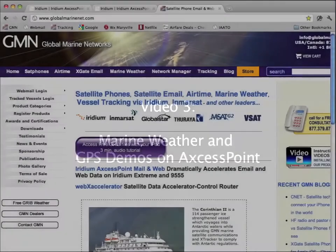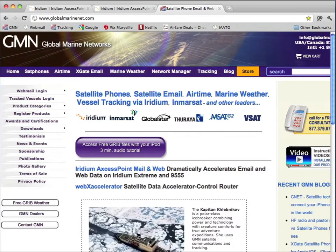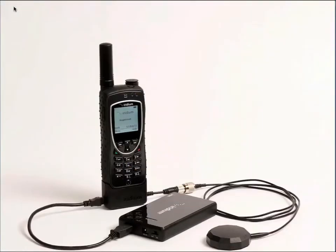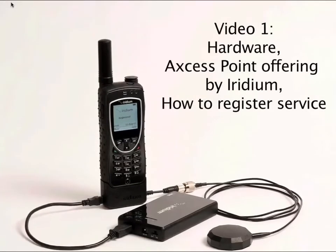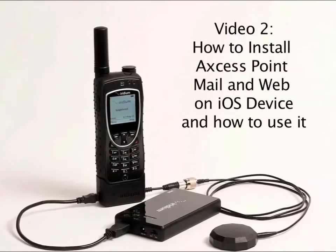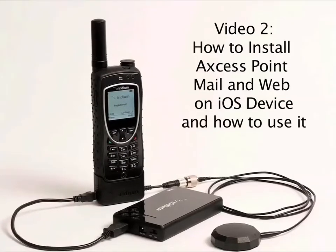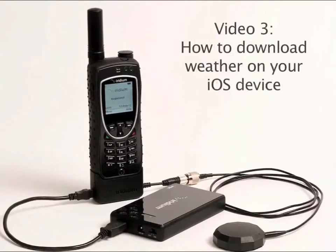Hello, this is Lewis Tech Global Marine Networks. This is the third video in a series on how to use your iOS device with the Iridium Access Point mail-in web service to receive weather information on your iOS device. In our first video, we discussed the hardware and the Access Point offering by Iridium and how to register the service. In our second video, we talked about how to install Access Point mail-in web on our iOS device and how to use it. And in our third video, we're going to discuss a specific application, which is how to download weather on your iOS device.